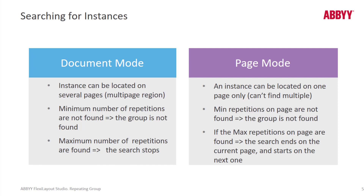Repeating groups are different from regular groups because they restrict how many repetitions can be found on a document, or even how many repetitions can be found on a given page. For instance, if you just wanted to define the first three iterations of a repeating group on each page, you can specify that in page mode. Or if you wanted the first 12 iterations within an entire document, you can specify that in document mode. This is specified on a tab in the repeating group in FlexiLayout Studio.